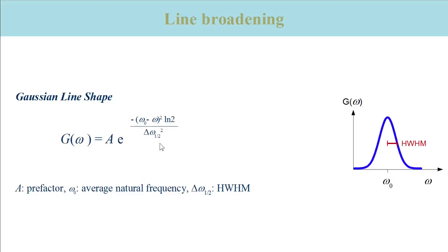Note that omega zero has a somewhat different meaning here than for the Lorentzian line shape function. For the Lorentzian line shape function, it was the natural angular frequency of the molecules, and it was the same for all molecules. For the Gaussian line shape function, it is the average of the natural frequencies, which are different for different molecules.